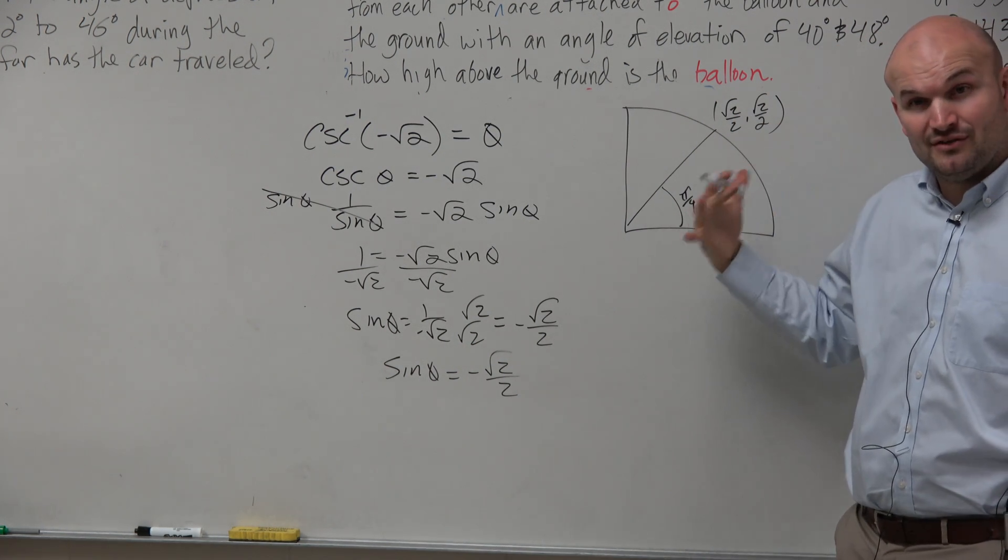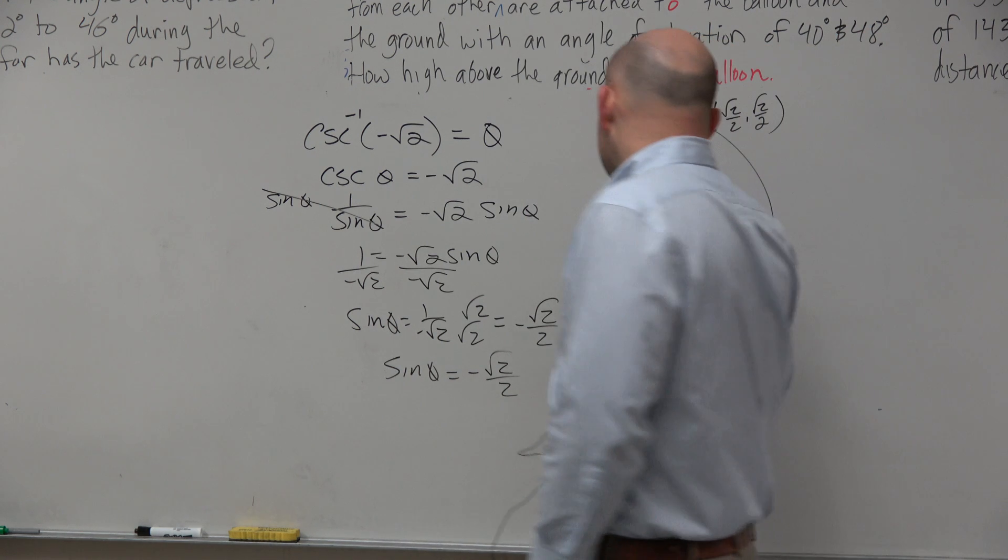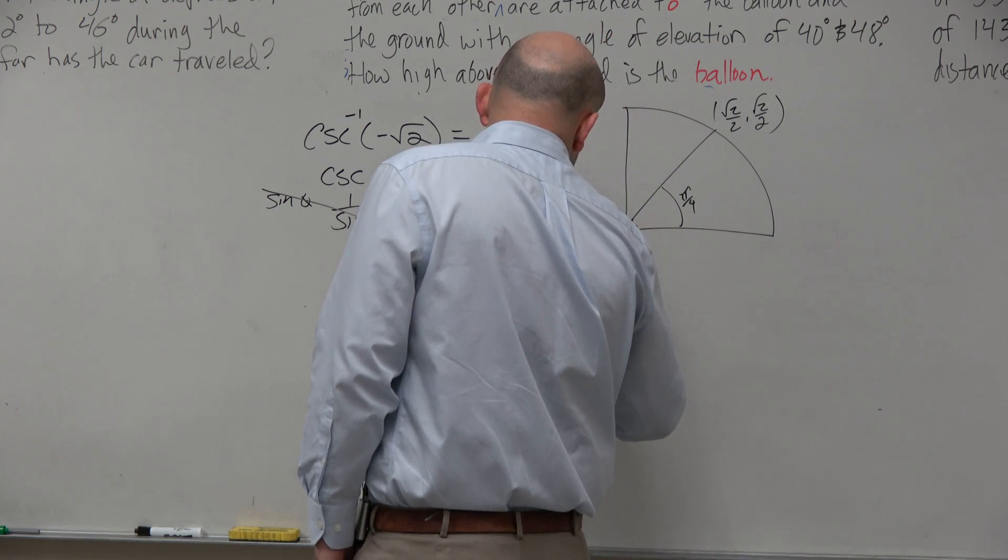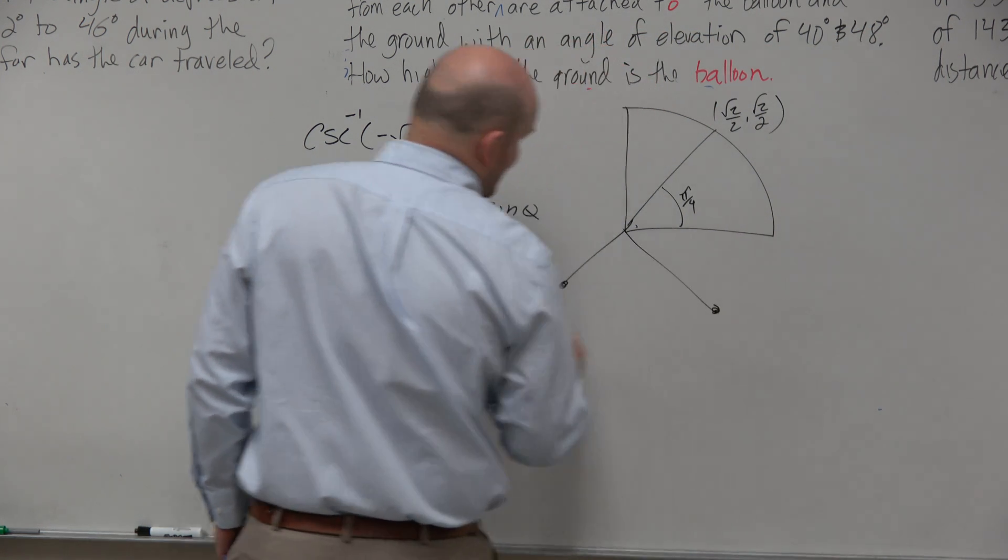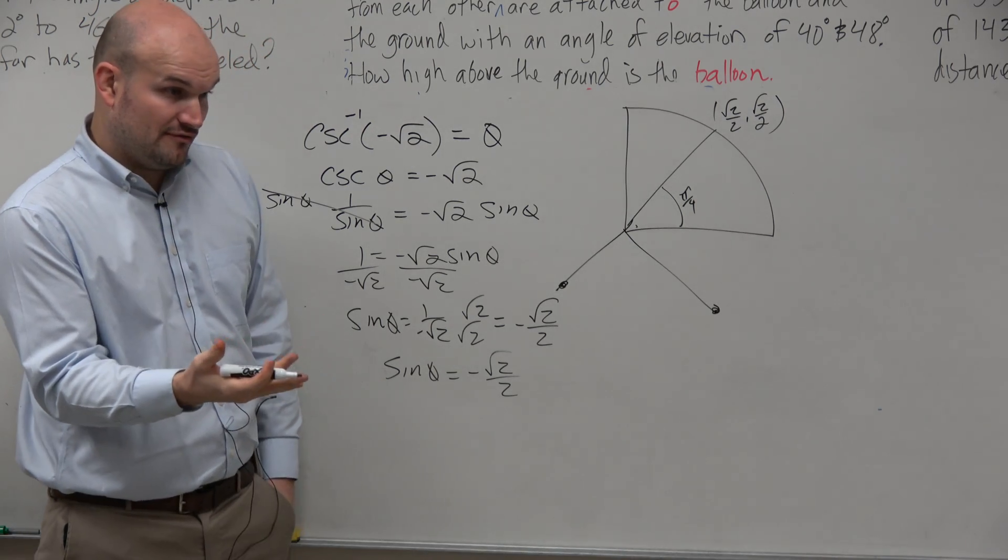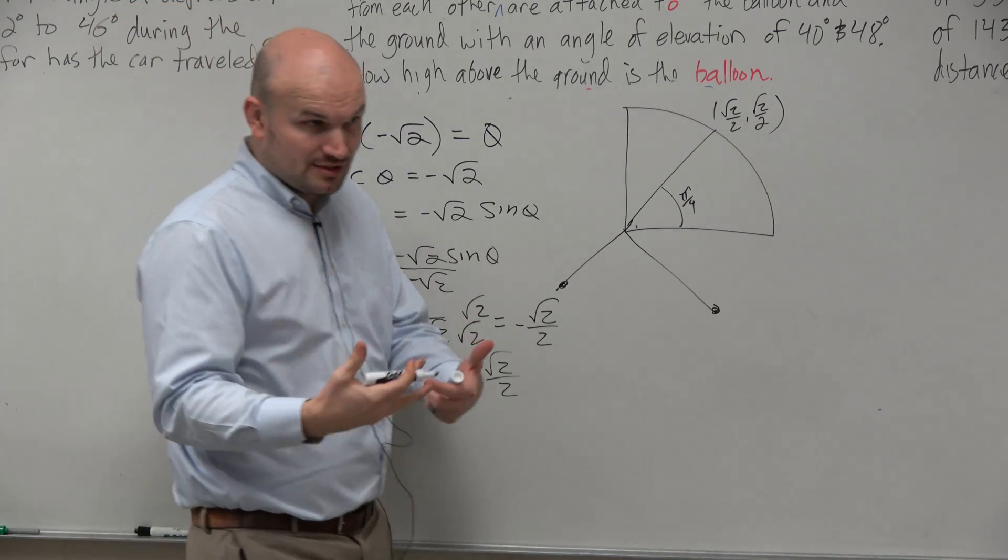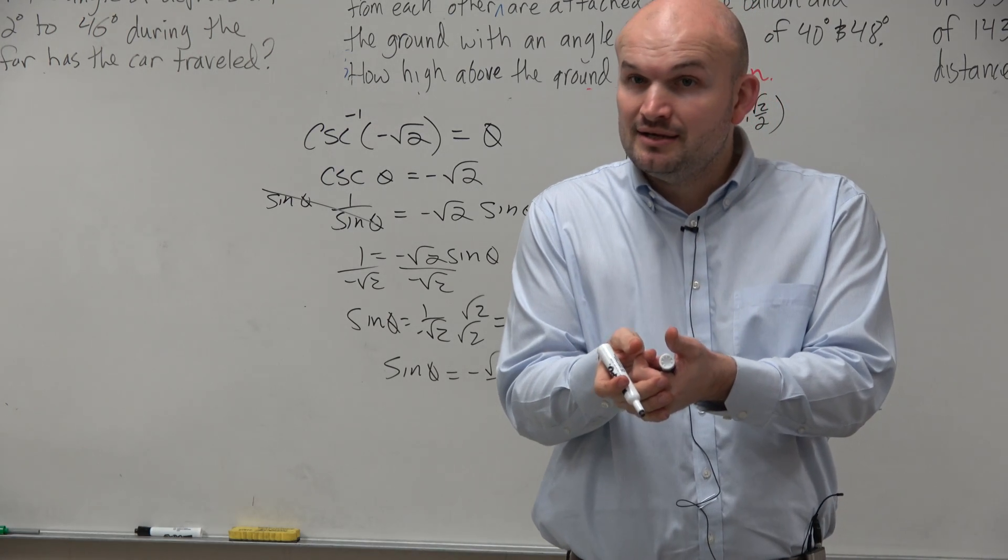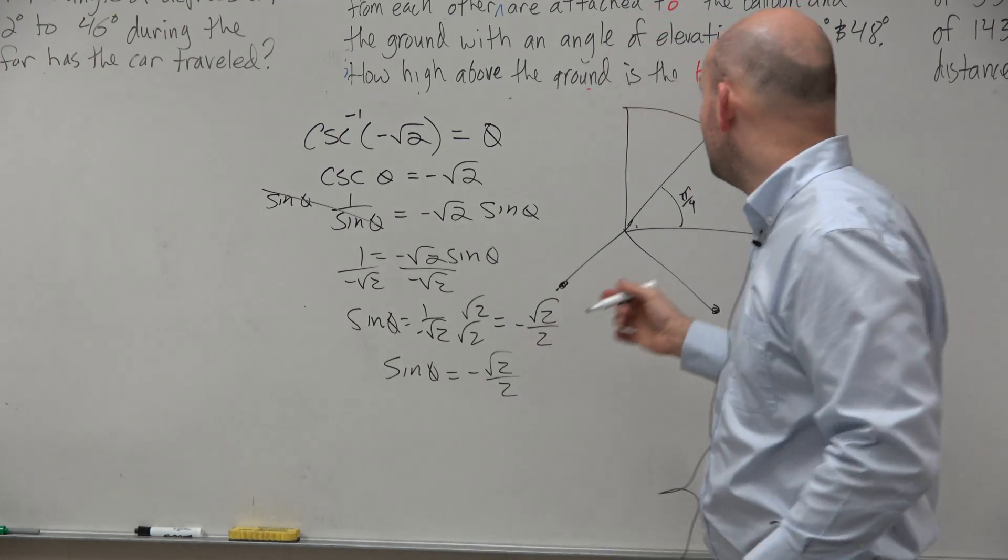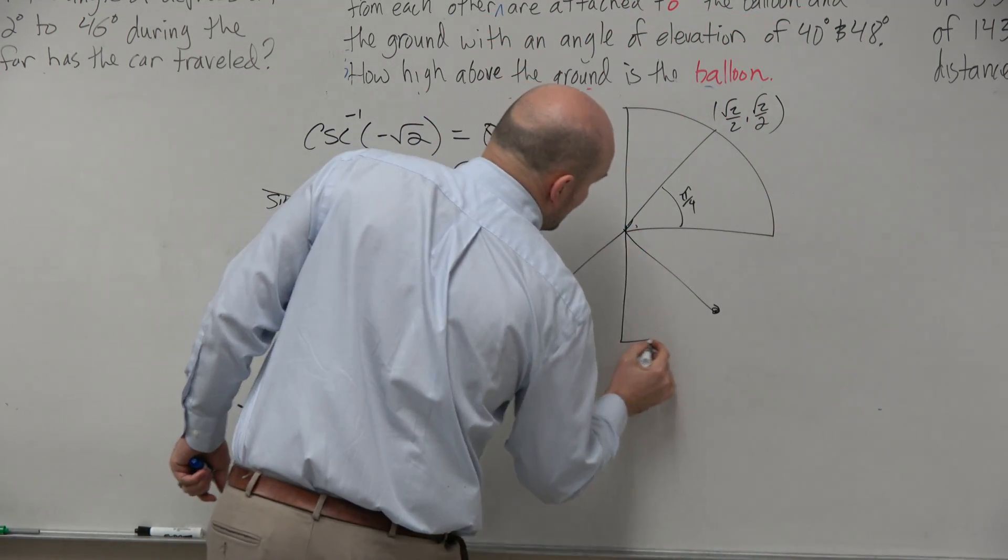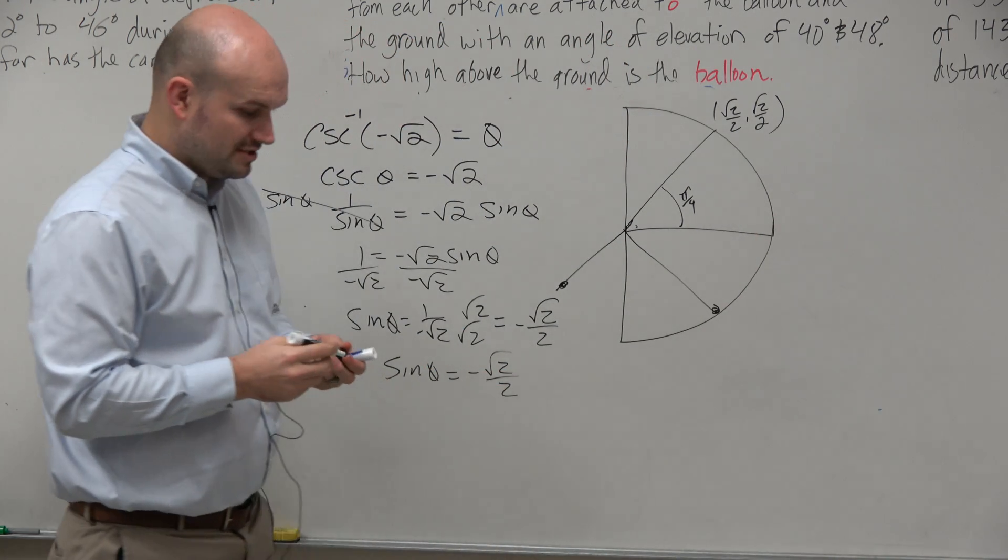But we need to give an angle that is negative. So that means our angle needs to be down here or down here, right? It needs to be in the third and the fourth quadrants. And what we learned last class period is that the domain is restricted for sine, when we're finding the inverse, between the first and the fourth quadrants.